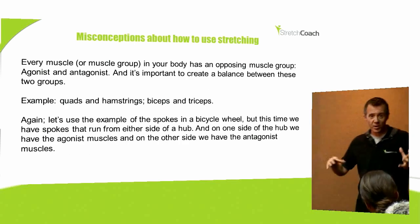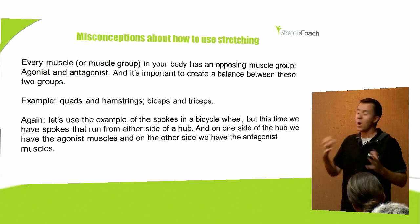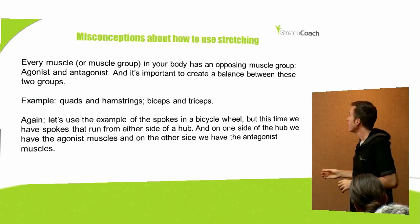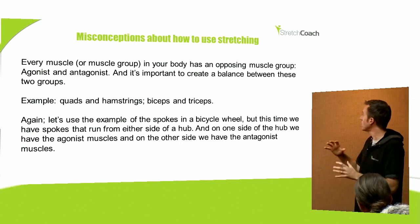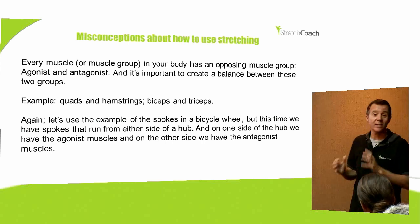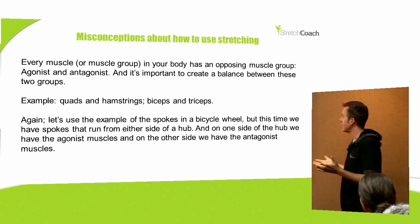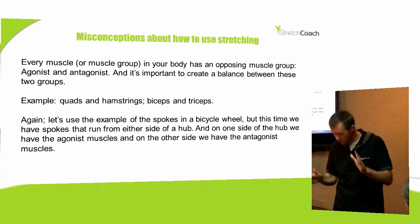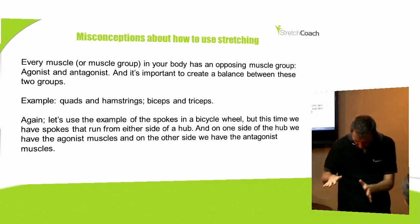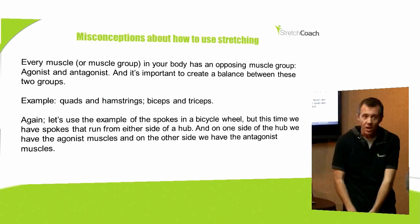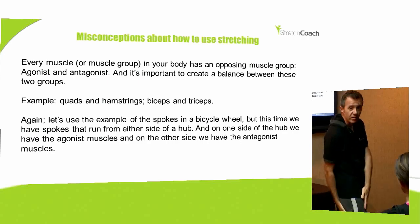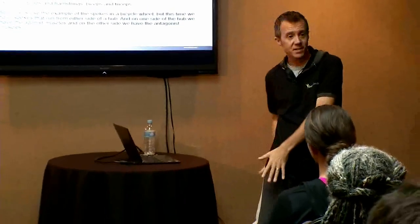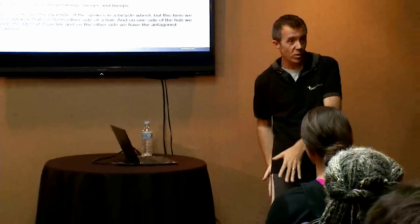Every muscle in the body or muscle group has an opposing muscle group. They're called an agonist and an antagonist, and it's important to create a balance between these two groups. A classic example of agonist and antagonist, or opposing muscle groups, are the quadriceps in the front of your legs, opposed by the hamstrings in the back of your legs.